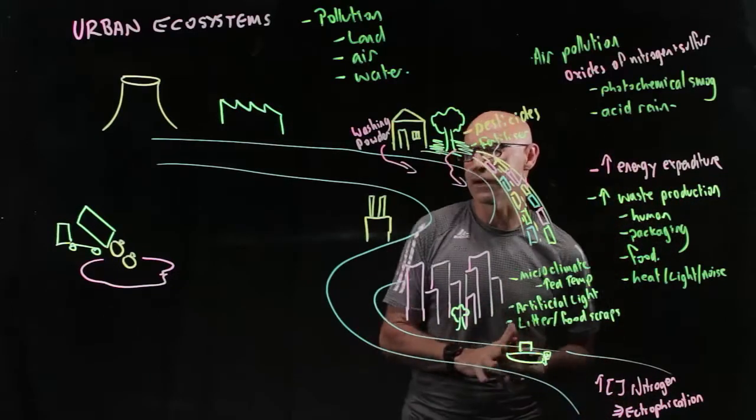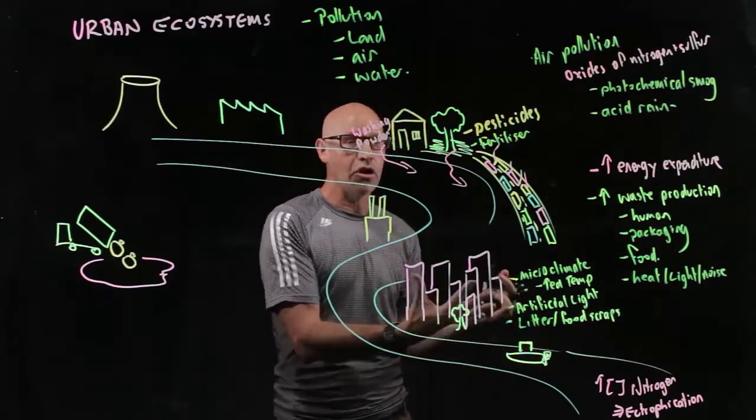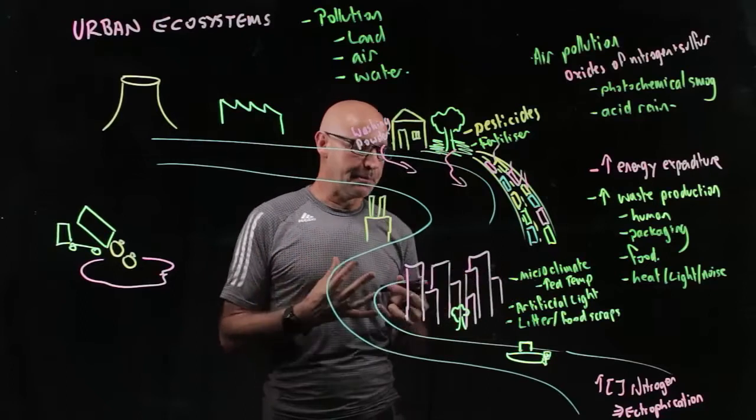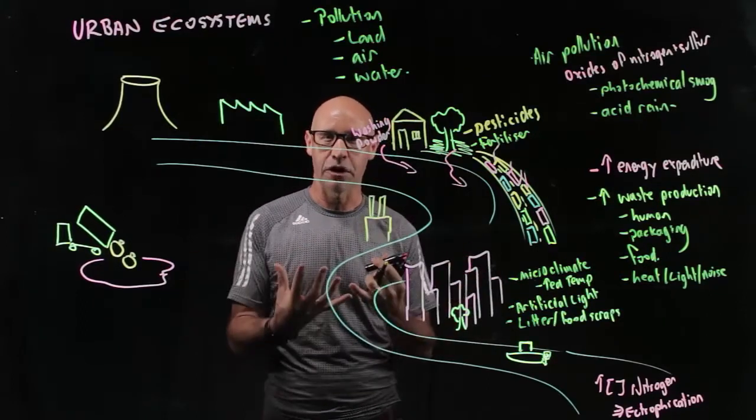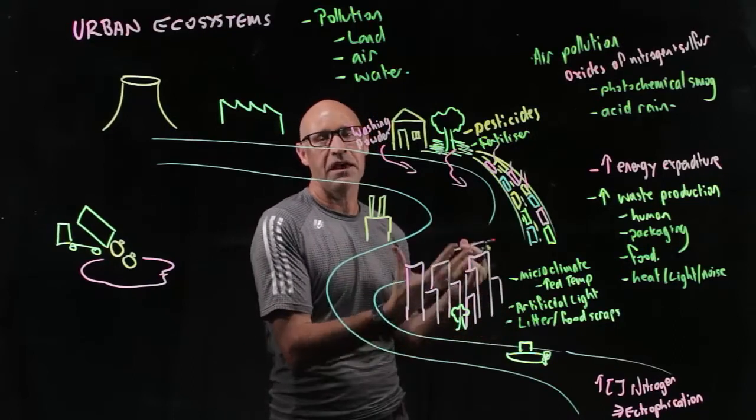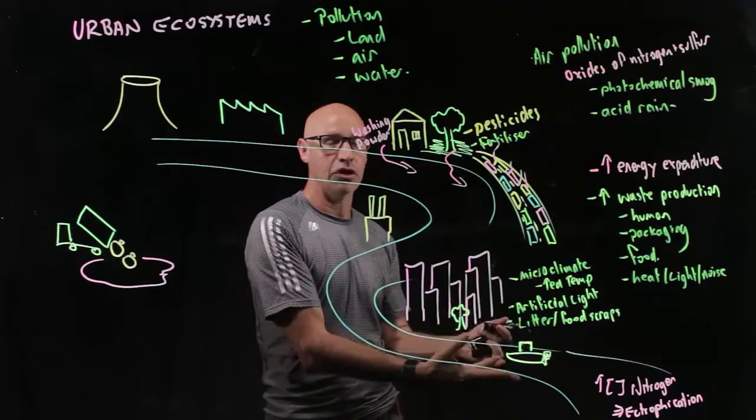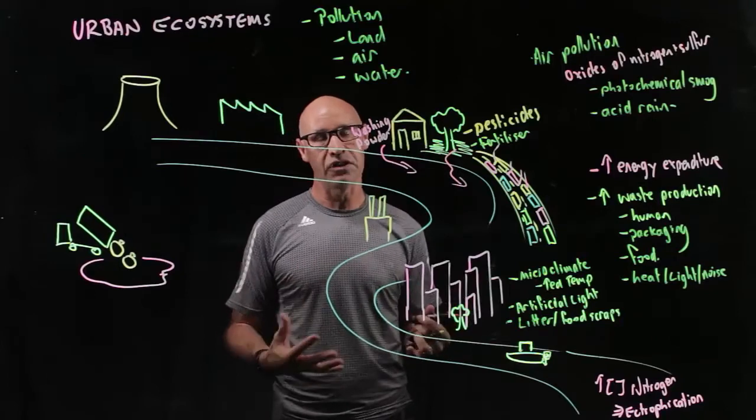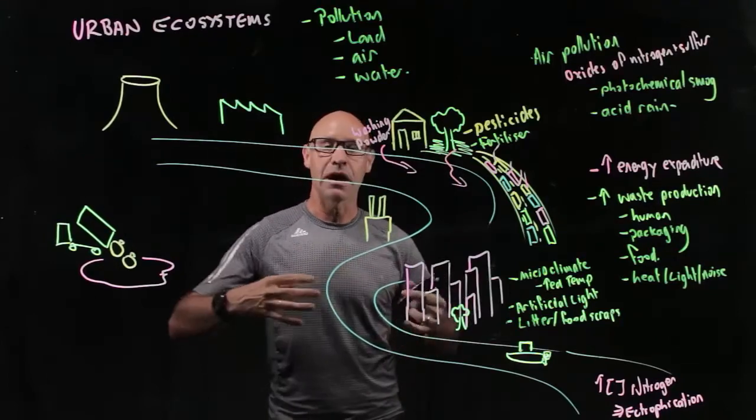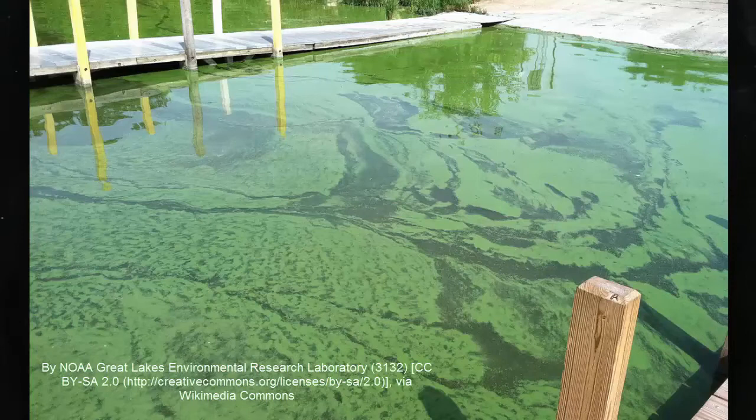So we're going to do another video on eutrophication. But basically what it means is that where we've got... So remember nitrogen is that main element that's required for plants to grow. So if we increase the nitrogen, I mean that's what we have in a fertiliser, if we increase the nitrogen in a waterway, we're going to get increased production of the producers, the algae. And we'll have an algal bloom which will grow out of control in that waterway.